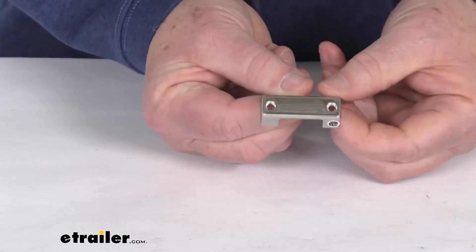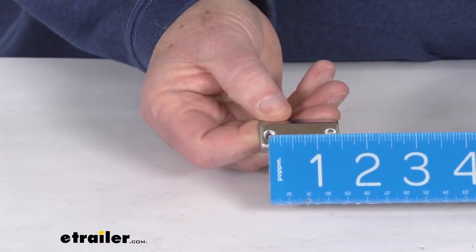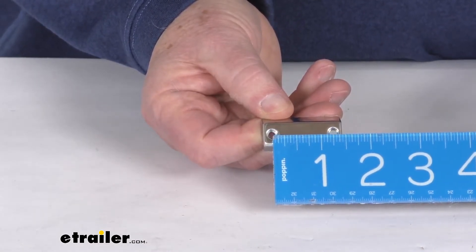Now the distance between the two mounting holes, you can see there's your two mounting holes, so the distance between them center to center is right at one and a quarter inches.